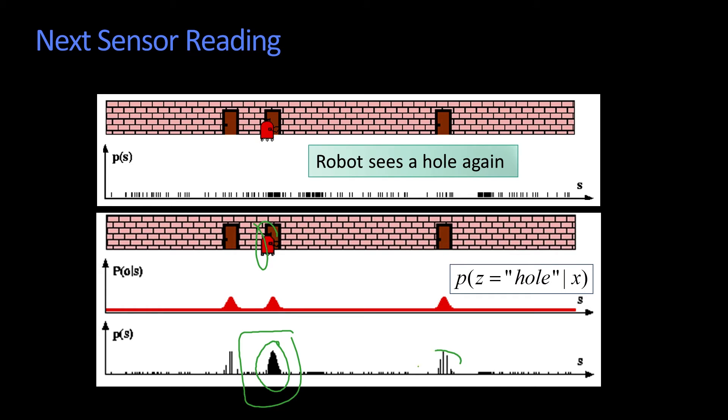There's still some probability that it's over here because if that previous reading was just wrong and the current reading was right, then I might be there. Same over here, if the current reading was right but the previous reading was wrong. Nope, the other way around.